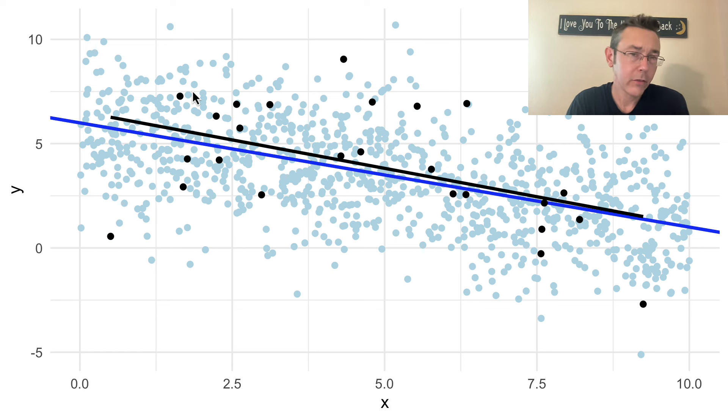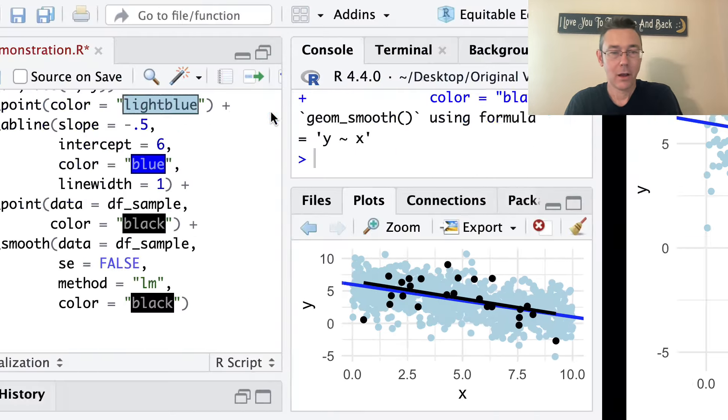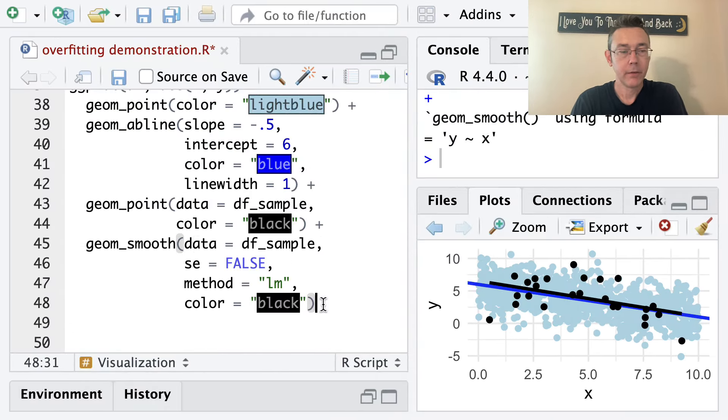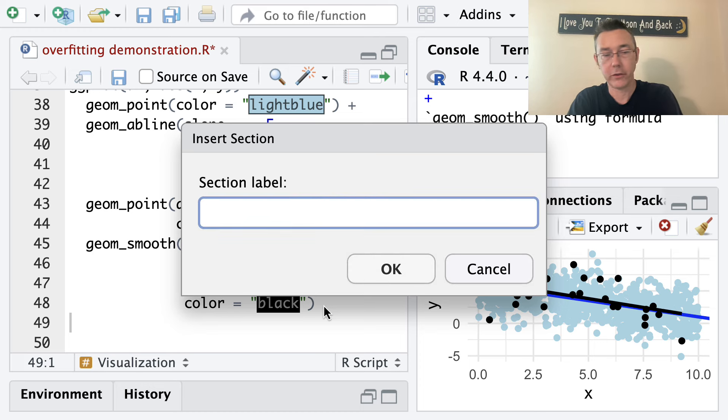So the next thing I want to do here is to actually show how each of these two models are performing on both the training data that we've used to build the model, and on the population data. And what we're going to see is that the linear model performs worse on the training data, we've already kind of seen that, but better on the population data. All right, so let's start a new section. By the way, that's command shift R to get a new section label.